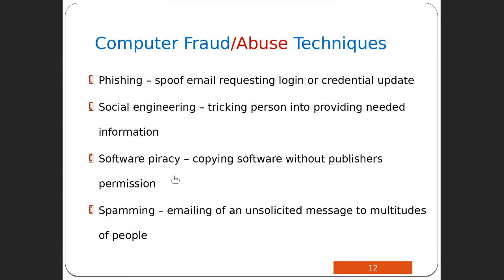Software piracy is copying software without the publisher's permission. If you have one software license on a CD and you make more than one installation, that is software piracy and is considered computer fraud. Finally, spamming is the emailing of unsolicited messages to large numbers of people — these fill your junk folder, waste your time and storage space, and reduce productivity. There are usually filters to catch spam, but it remains a type of computer fraud.